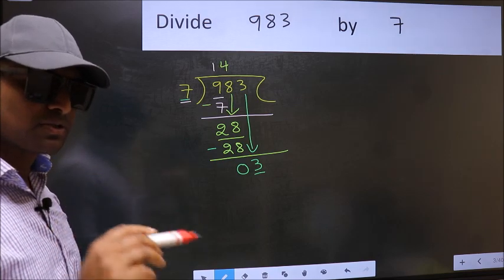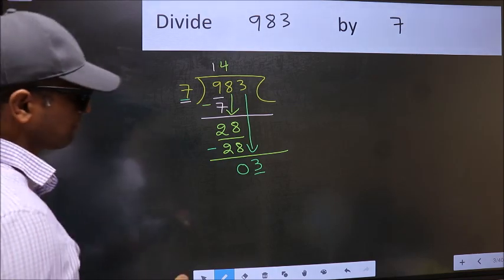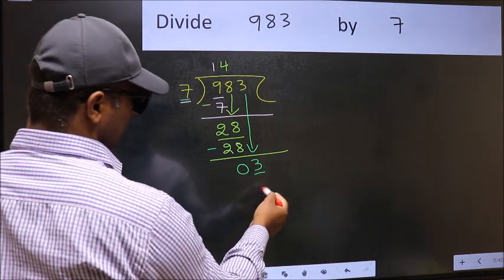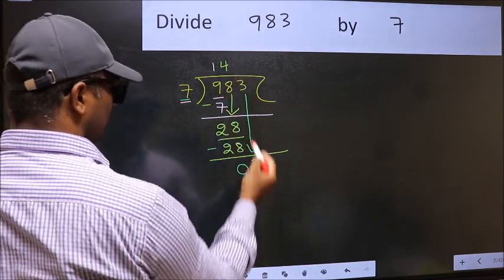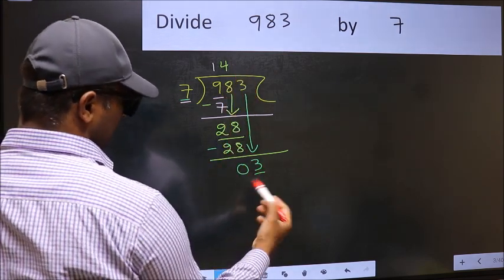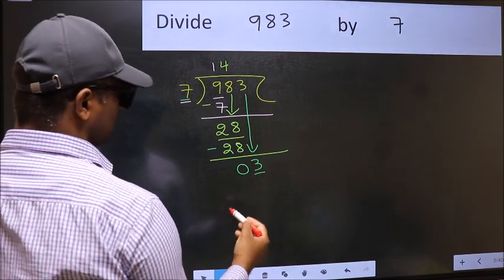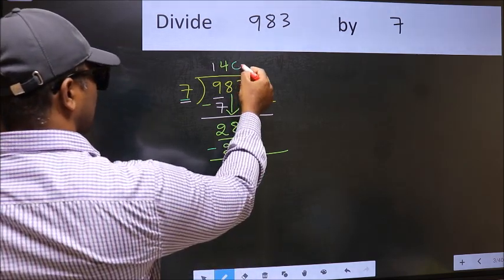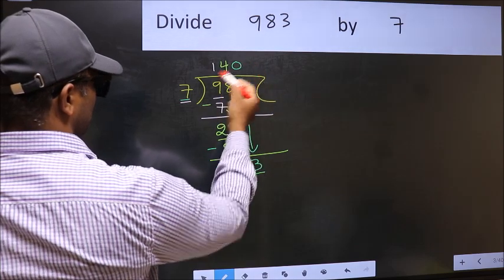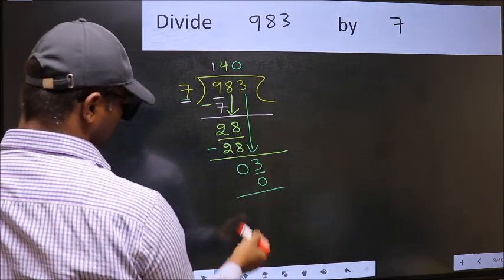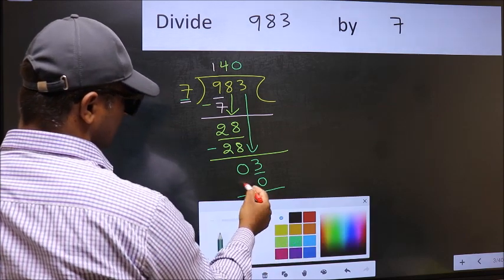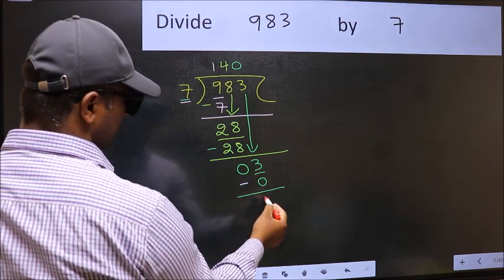Instead, what you should think of doing is, which number should we take here? If I take 1, we will get 7. But 7 is larger than 3. So what we should do is we should take 0. So 7 into 0 is 0. Now you should subtract. 3 minus 0, 3.